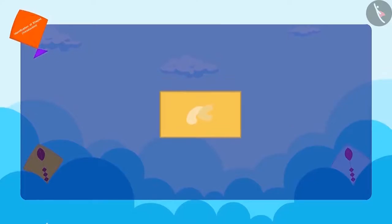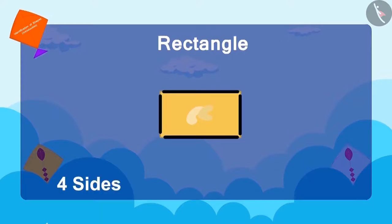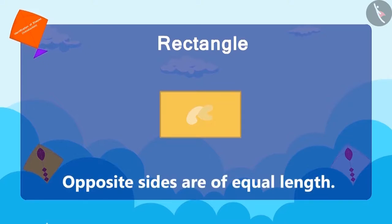Have you seen this shape before? So this is a rectangle. A rectangle has four sides. Its opposite sides are of equal length.